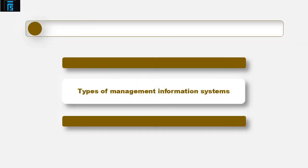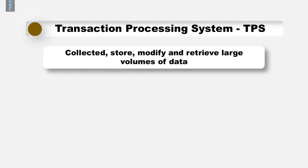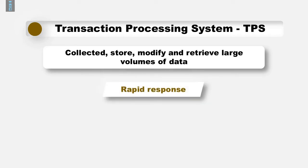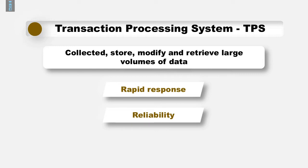In terms of the types of management information systems, there are several types that can provide data to an organisation. The first is called a transaction processing system, or TPS. A TPS system has the ability to collect, store, modify and retrieve large volumes of data of an organisation. Key characteristics include rapid response — if fast performance is vital, input needs to become output in a matter of seconds — and reliability: if potential failure could stop business, then a backup and recovery process must be in place.